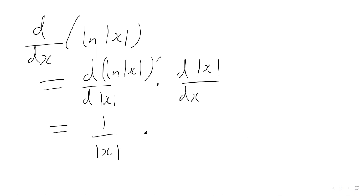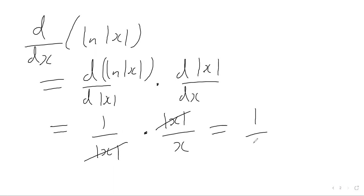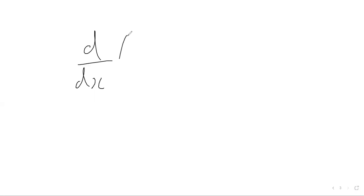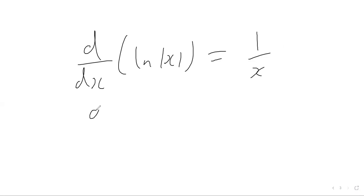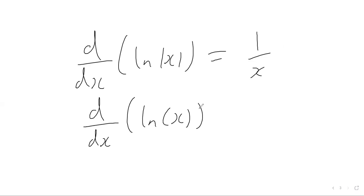The second part is the derivative of the modulus of x with respect to x. We've actually done this in a previous video, and what we got was the modulus of x over x. Therefore, when we multiply these two fractions together, these cancel out and we get one over x. So differentiating the natural log of the modulus of x gives us one over x.